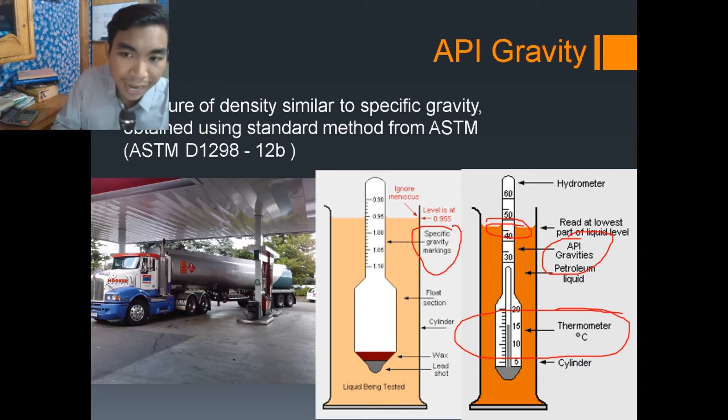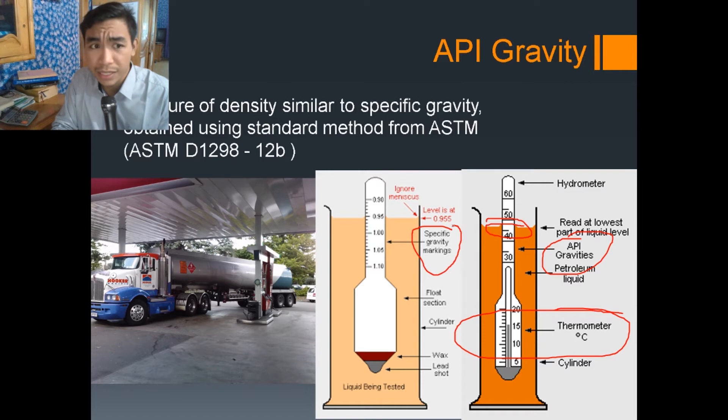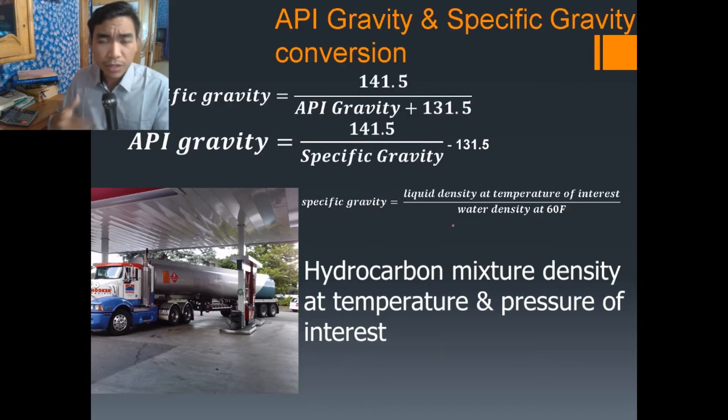So you can convert API gravity to specific gravity using this calculation. Specific gravity equals 141.5 divided by API gravity plus 131.5.